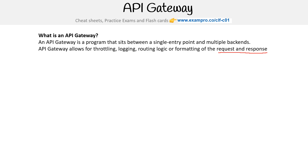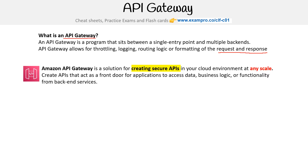The service for AWS is called Amazon API Gateway. API gateway is just a type of pattern, and this is one of the few cases where AWS has named the thing after what it is. Amazon API Gateway is a solution for creating secure APIs in your cloud environment at any scale, creating APIs that act as a front door for applications to access data, business logic, or functionality from back end services.